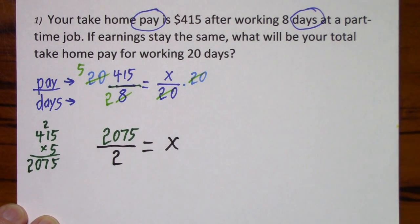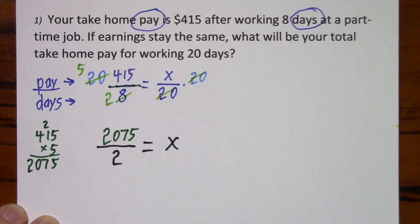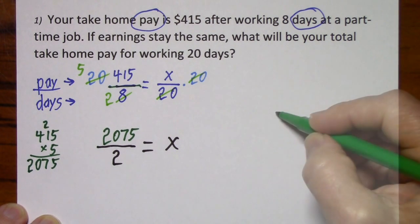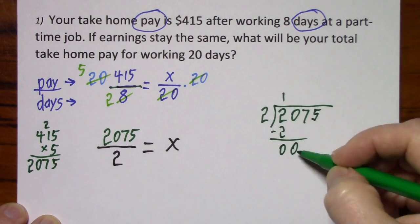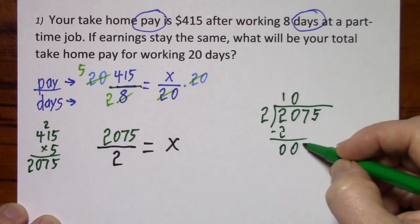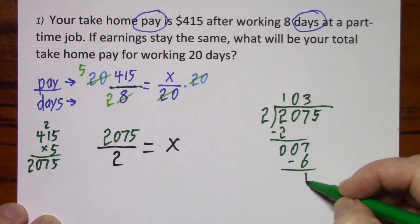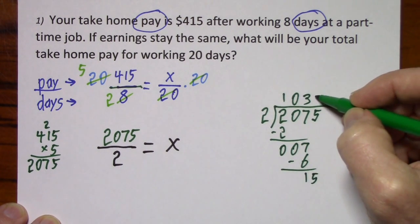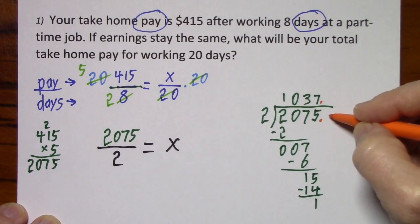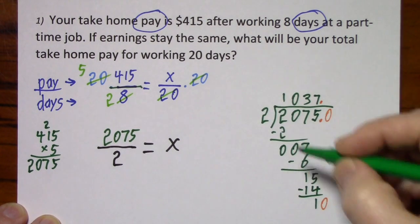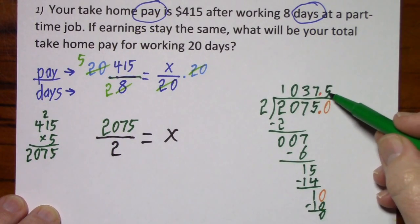So all we have to do is clean this up. Since they want the total take home pay we should represent this as a decimal, since money is usually in decimal form. I'll do my scratch work off to the side. 2 goes into 20, bring down your 7. 2 goes into 7 three times, 2 goes into 15 seven times. Put in the decimal, give yourself a 0 and bring it down. 2 goes into 10 five times. If we're talking about money this is 1,037 dollars and 50 cents.